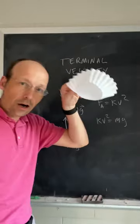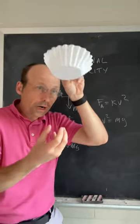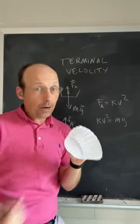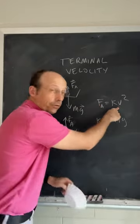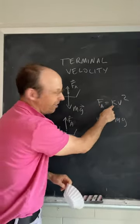So what is terminal velocity? When I take a coffee filter and drop it, when it starts to move, there's a backwards pushing air resistance force that's proportional to the velocity squared. That's important—K is the proportionality constant.